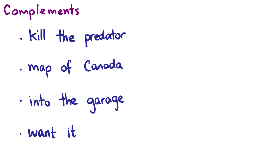Complements are usually objects when they come with verbs, but complements occur with nouns and prepositions as well. For instance, with 'kill the predator', this is a case where we have a verb. The question is: what are we killing? Well, we're killing the predator. So in order for 'the predator' to be in the sentence, it has to be introduced by the word 'kill'. Kill has to introduce the object of the sentence, so this would be the complement of the verb.